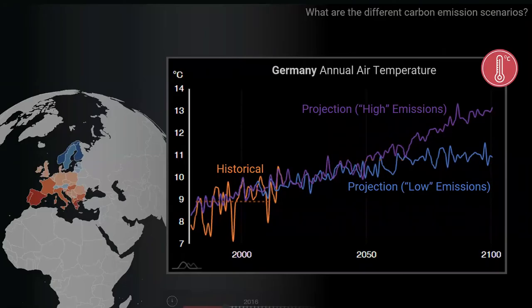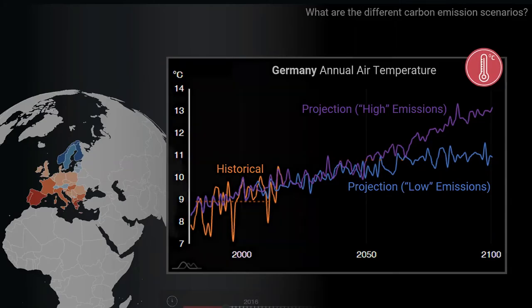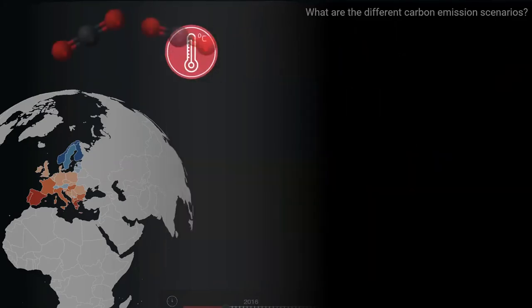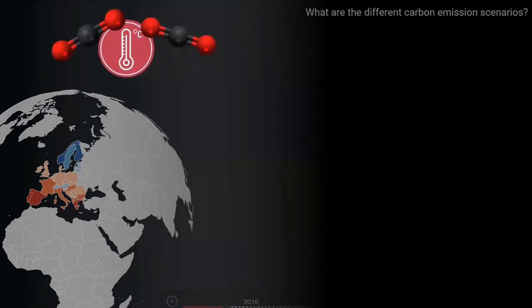To understand both why these different scenarios are necessary and what they mean, let's take a step back. It has been long established that carbon dioxide is one of the main drivers of temperature change. With that in mind, we need to look back at historical levels of carbon dioxide in the atmosphere before we can project future levels.